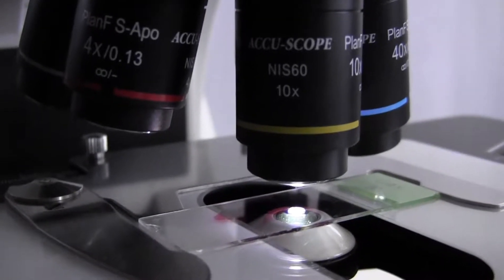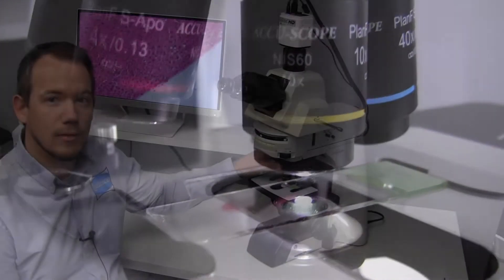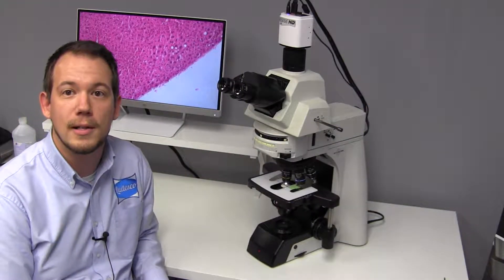On this particular microscope, we have the plan fluorite semi-apochromatic objective. This is a really good option for fluorescence microscopy.